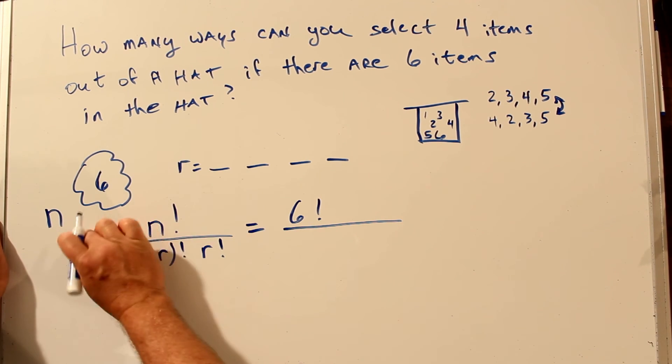Our formula for combinations is N factorial divided by N minus R factorial times R factorial. N is six factorial. N minus R. Six minus four is two factorial. And R is four factorial. Let's expand that. Six factorial. Let's expand four factorial first because we'll cancel the most numbers that way. Cancel. And we're left with two factorial in the bottom.